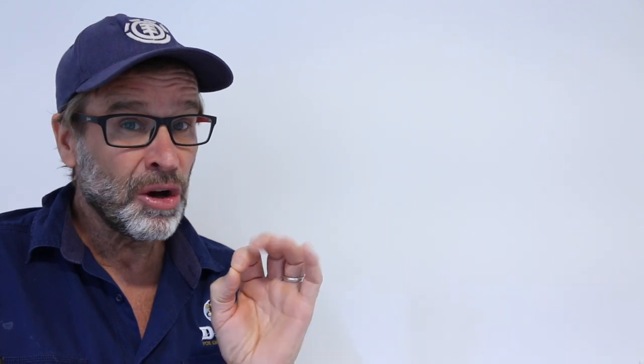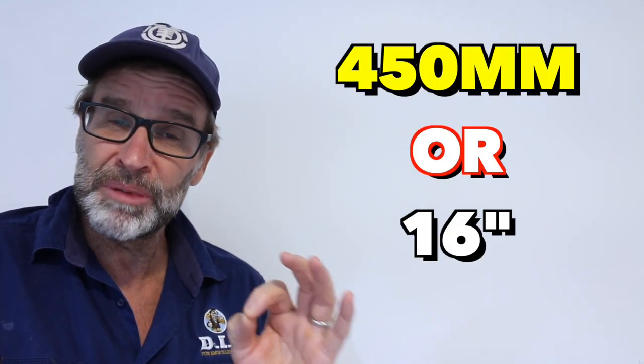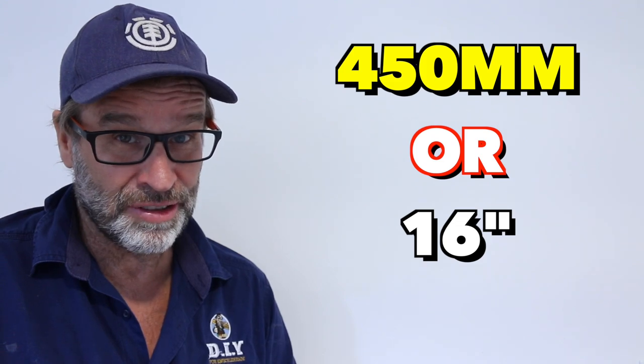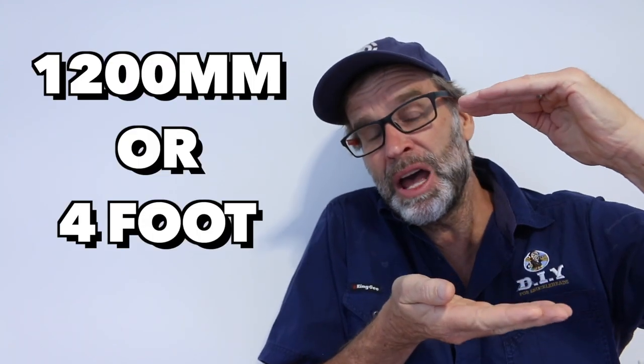Okay. The next thing you need to know is that in most new homes built today, the wall stud spacing is 450 millimeters, or 16 inch on center, which simply means from the center of one stud to the center of the next stud is 450 millimeters, or 16 inches. And finally, that sheets of plasterboard, drywall, sheetrock, they normally come in 1200 millimeter, or four foot wide sheets, that are usually installed horizontally.